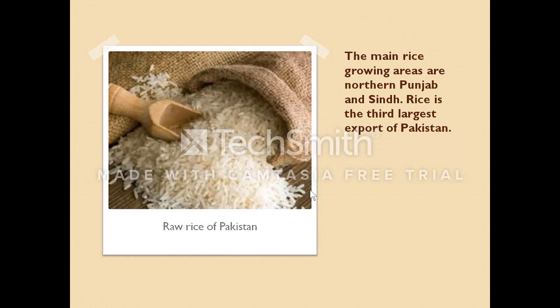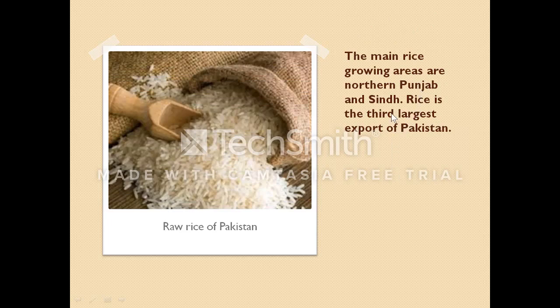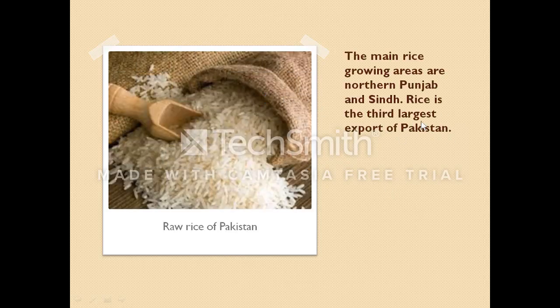Here we have rice. The main rice-growing areas are northern Punjab and Sindh. Rice is the third largest export of Pakistan. Here is some raw rice of Pakistan. Rice is really tasty when it's cooked. There are loads of dishes that can be made with rice — boiled rice, dal chawal, pulao, biryani, and other yummy dishes. I love rice.